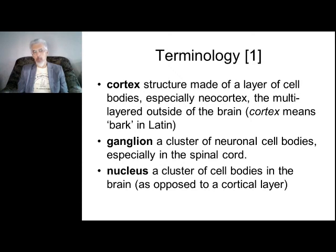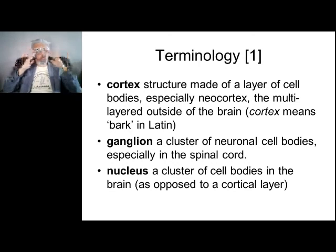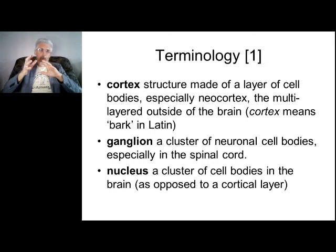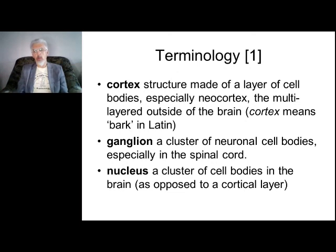Every idea and every pattern of behavior is a condition of the nervous system. The nervous system jumps from one state to other states. The number of states the nervous system can create depends on the number of neurons. A cluster of neuron cell bodies situated in the spinal cord is called a ganglion.